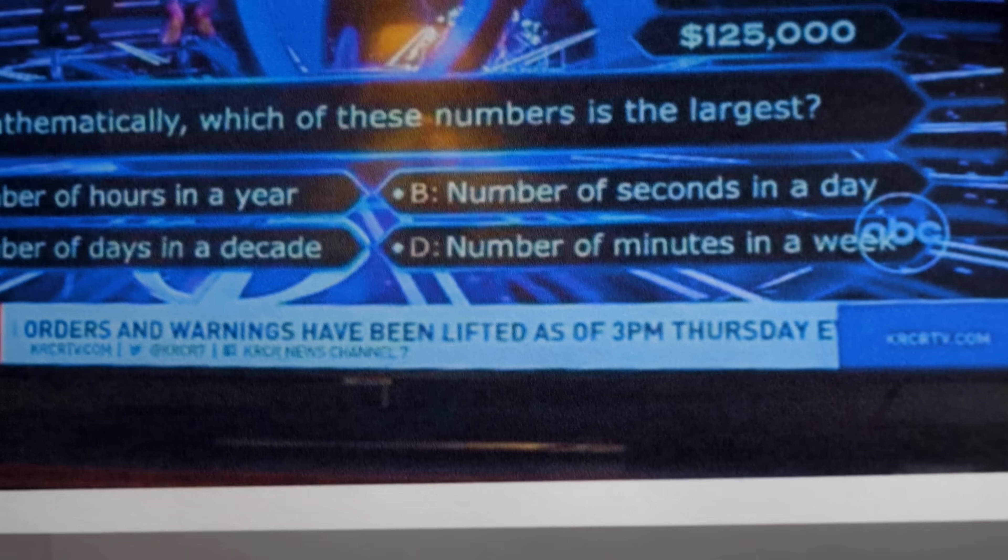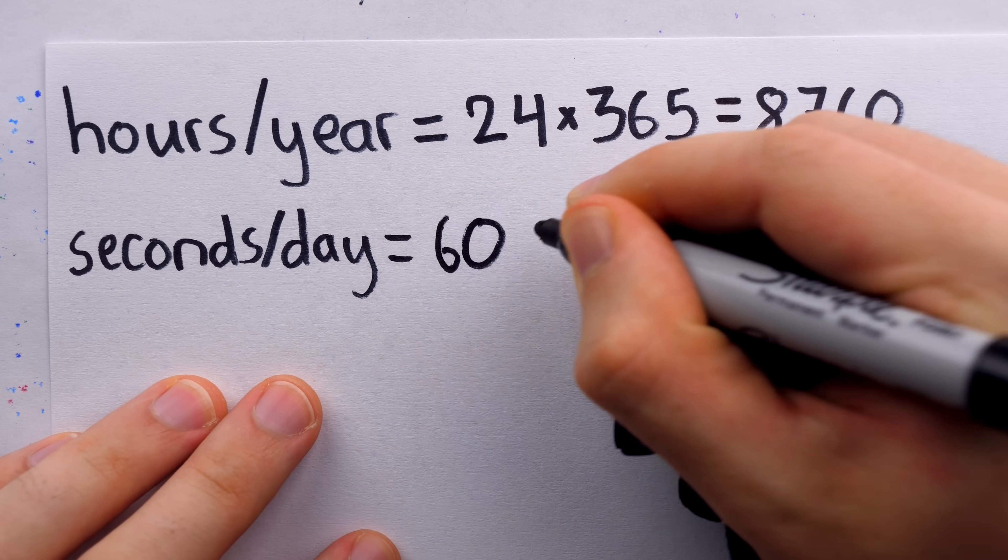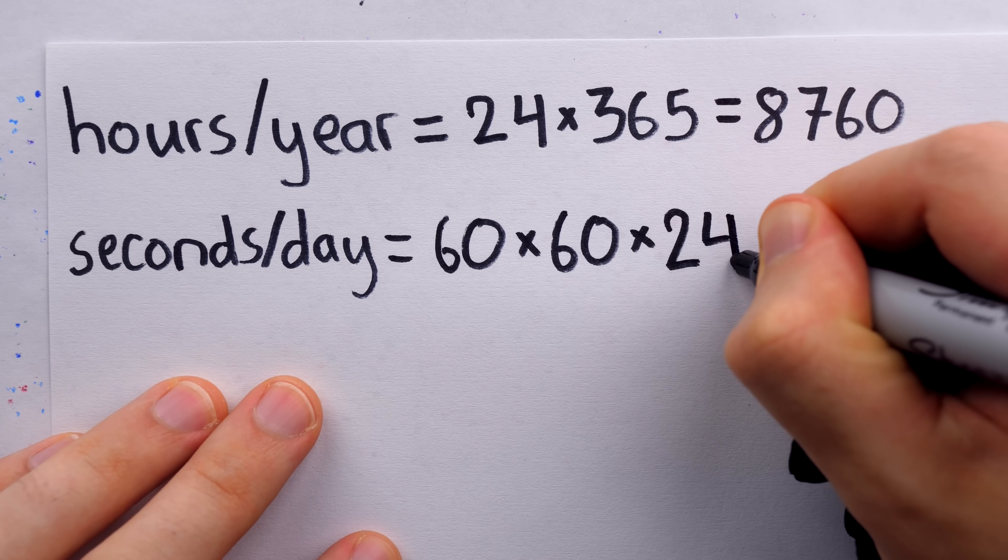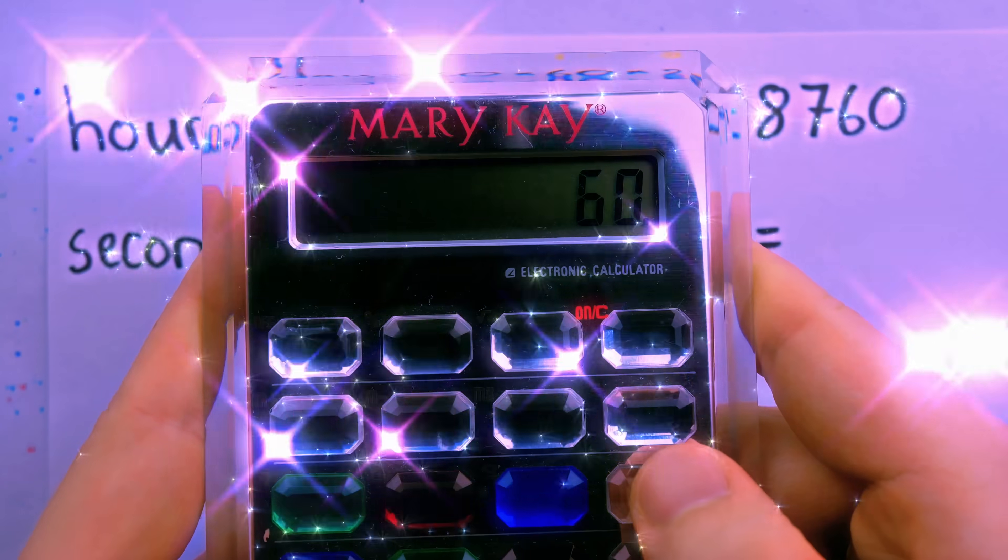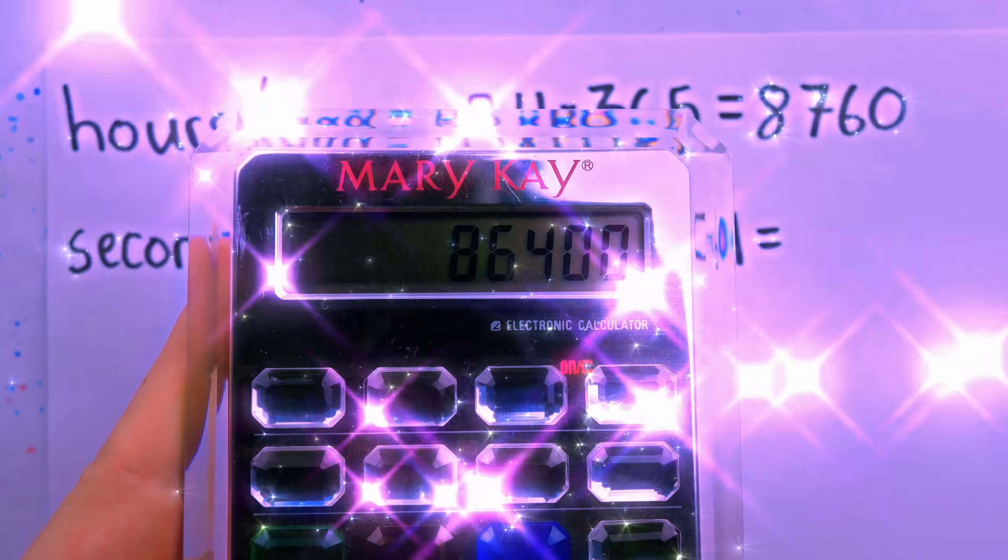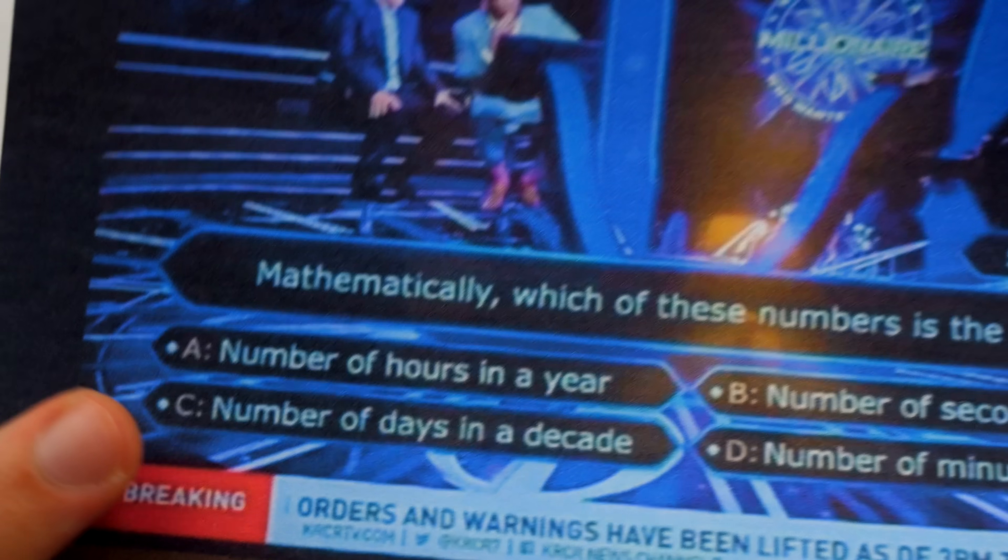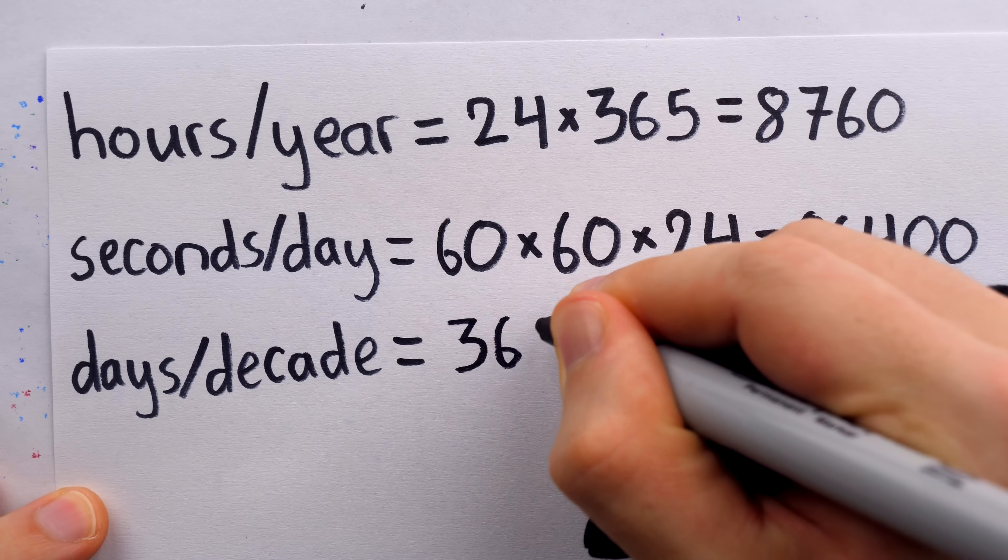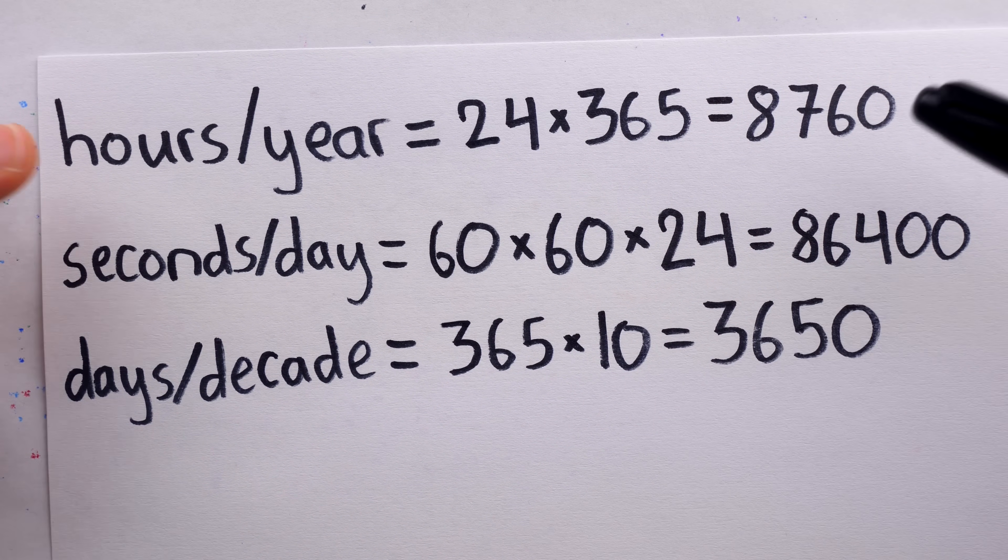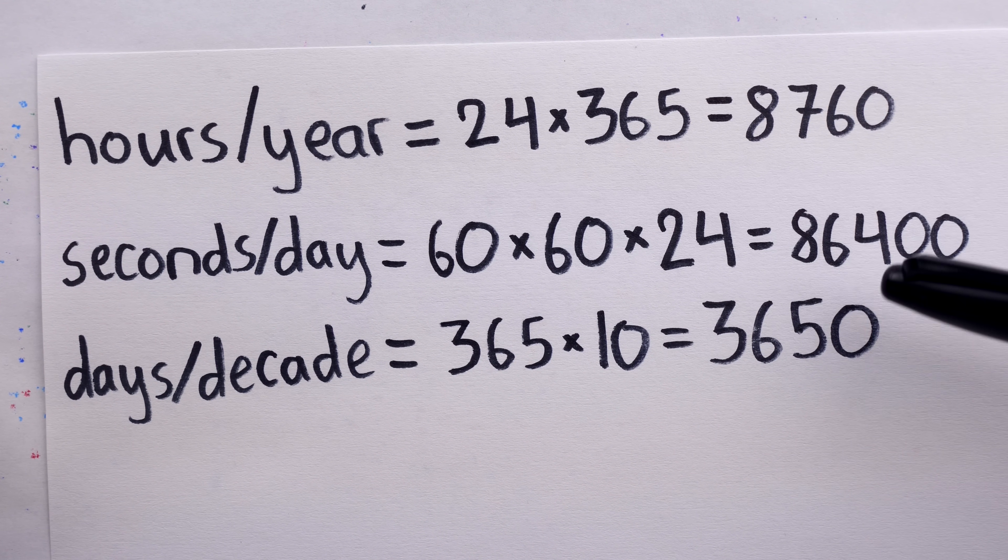Answer choice B is the number of seconds in a day. For this, we take the number of seconds in a minute, which is 60, multiply that by the number of minutes in an hour, which is 60, multiply that by the number of hours in a day, which is 24. And crunching the numbers on this, we find that the total is 86,400 seconds. Answer choice C is the number of days in a decade. That's just the number of days in a year, 365 times the number of years in a decade, which is 10, so 3,650.